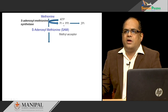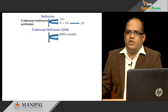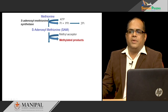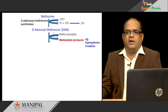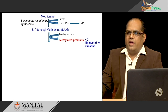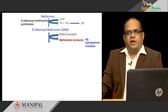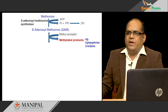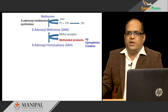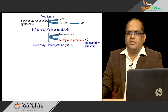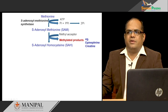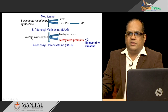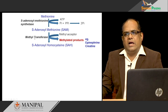Next, the methyl group carried by S-adenosylmethionine is donated to methyl acceptors, and we produce methylated products like epinephrine and creatine. These products use the methyl group donated by SAM, and the product we get is S-adenosyl homocysteine. The difference is that S-adenosyl homocysteine does not contain the methyl group that was carried by methionine. This reaction is catalyzed by methyl transferase.